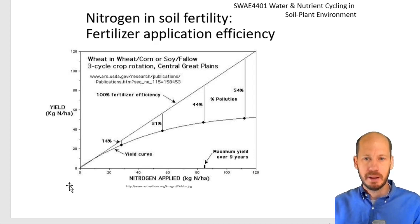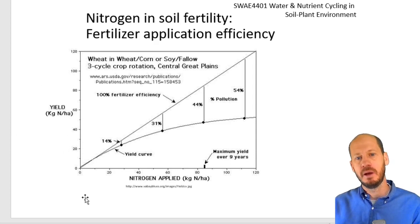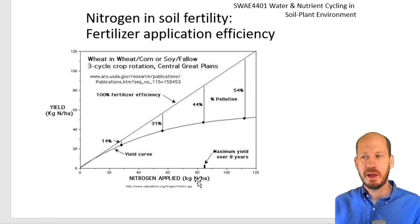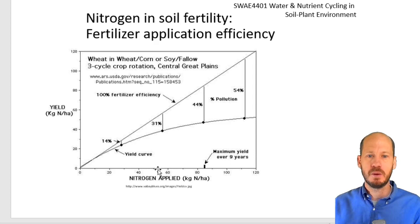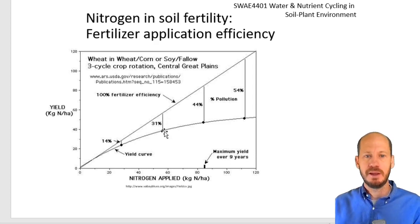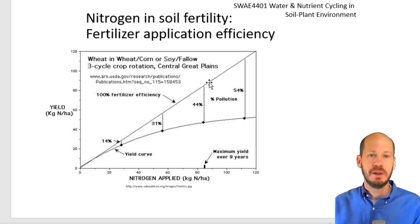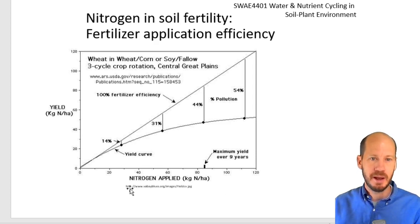If all the nitrogen we applied was absorbed by the plant, we would have a straight line on this graphic. This graphic shows nitrogen uptake on the vertical axis and nitrogen applied on the horizontal axis. The more nitrogen applied, the more uptake you will have. But when you increase the nitrogen application, you decrease the efficiency — not all the nitrogen applied will be taken up by the plants. If you apply 60 kg of nitrogen per hectare, uptake will be only about 70%. If you apply 100 kg, uptake will be only about half.